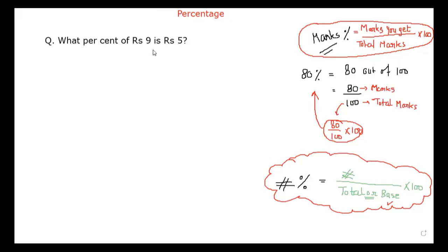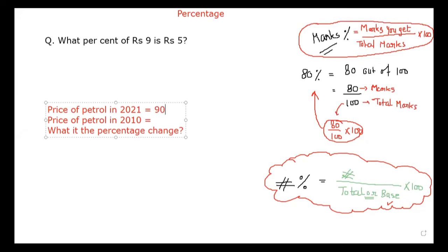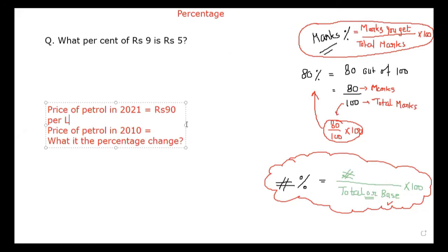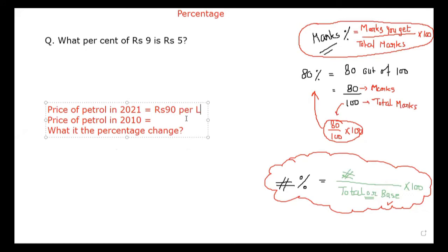Our next question: do you know what the petrol price is right now? No sir. The year 2021 is approximately 90 per liter. The price of petrol in the year 2010 is approximately 51, so let's take 50 per liter. Just to make calculations easy and understand the concept. Now, what is the percentage change? The word 'change' is very important.